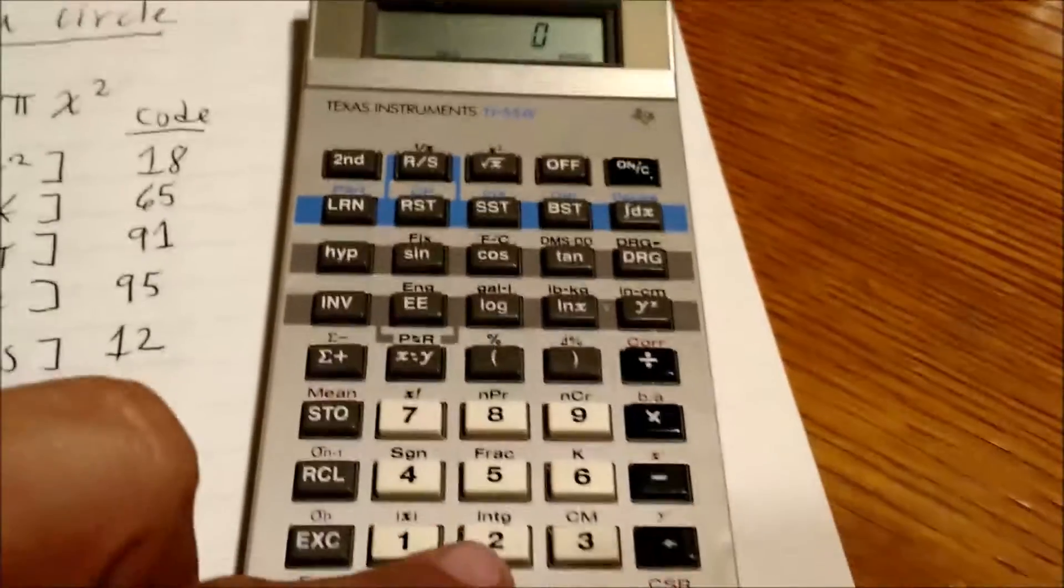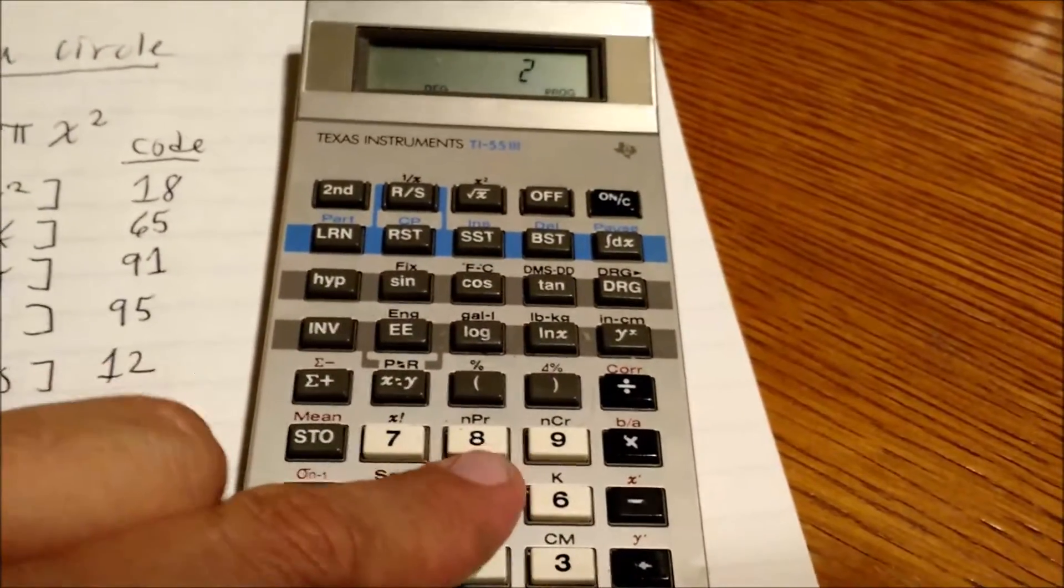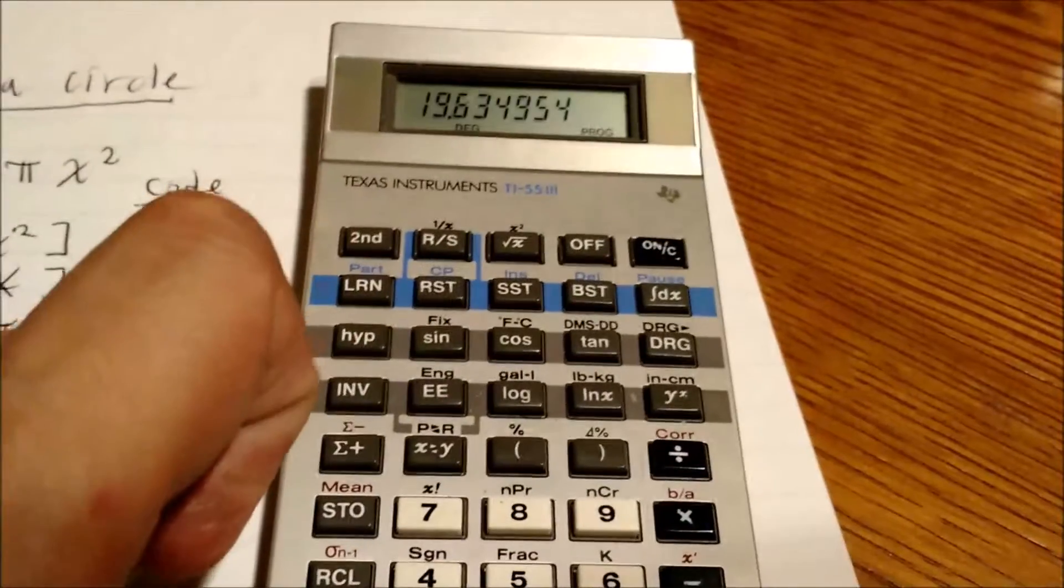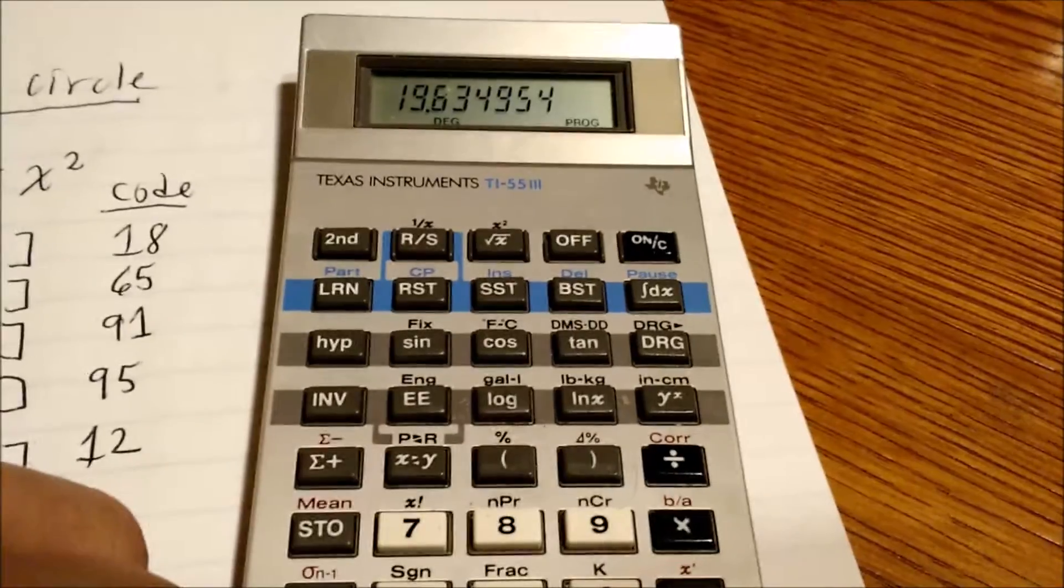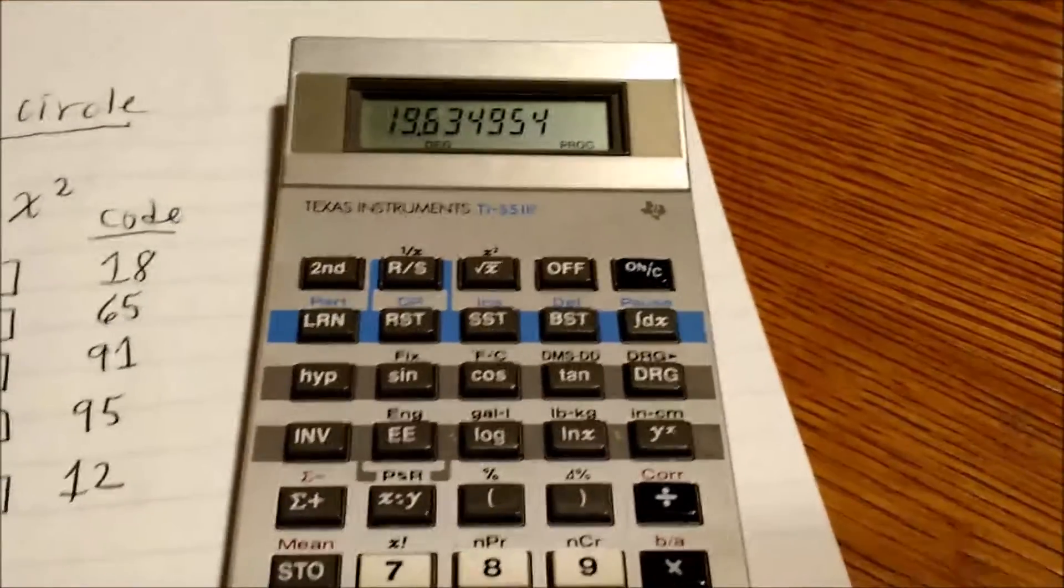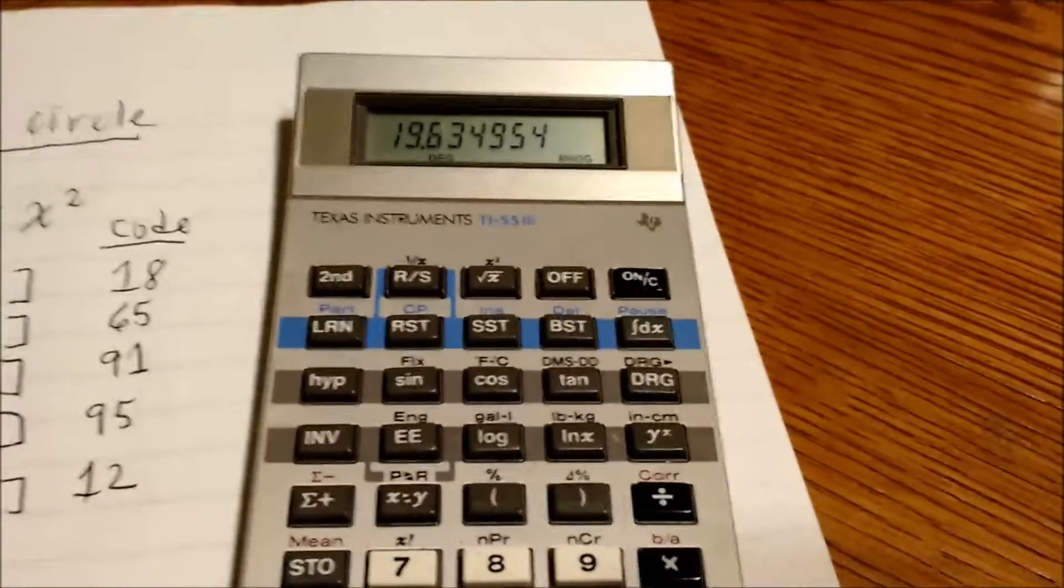And, let's say that the radius is 2.5. Hit run stop, and I get the area of 19.634954. So, that's basic programming for the TI-55-3.